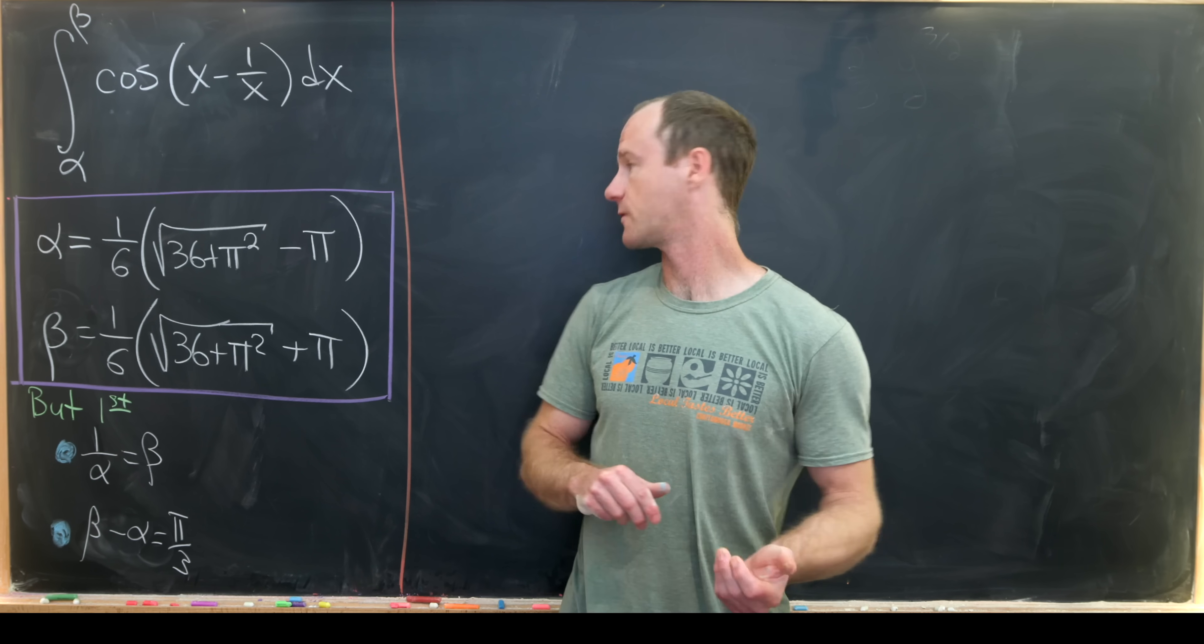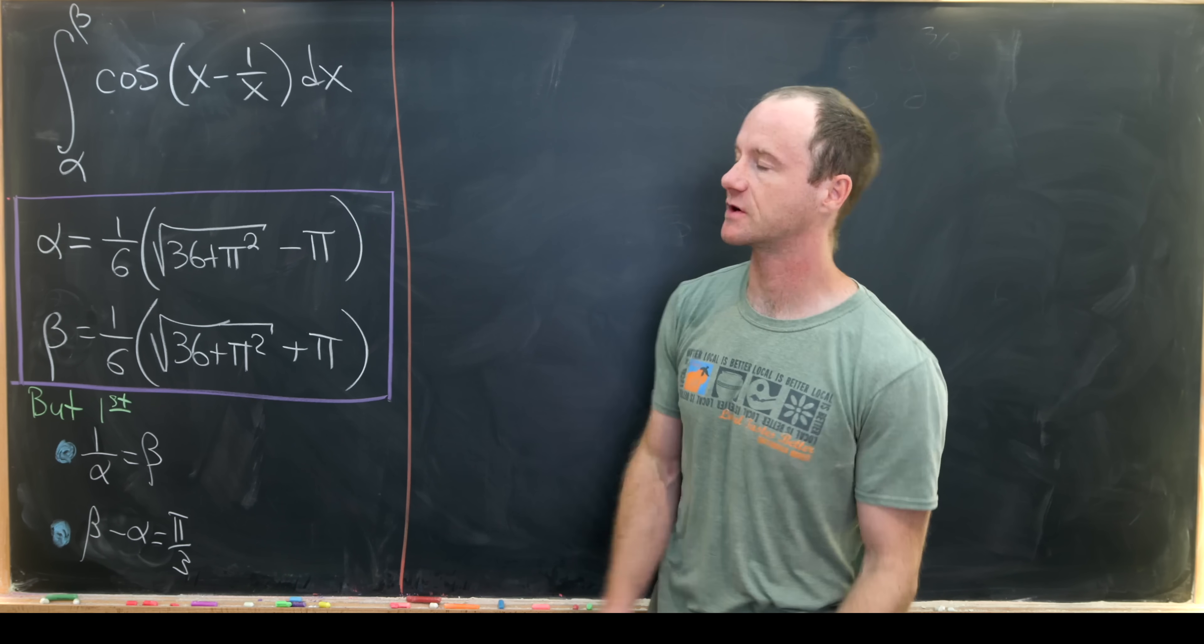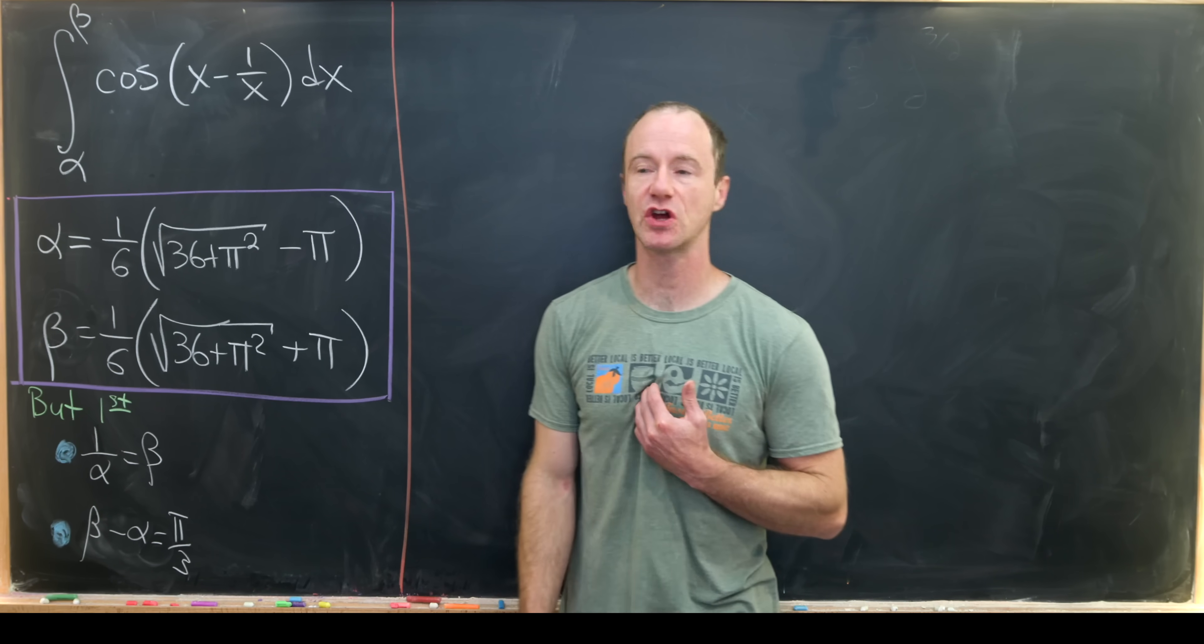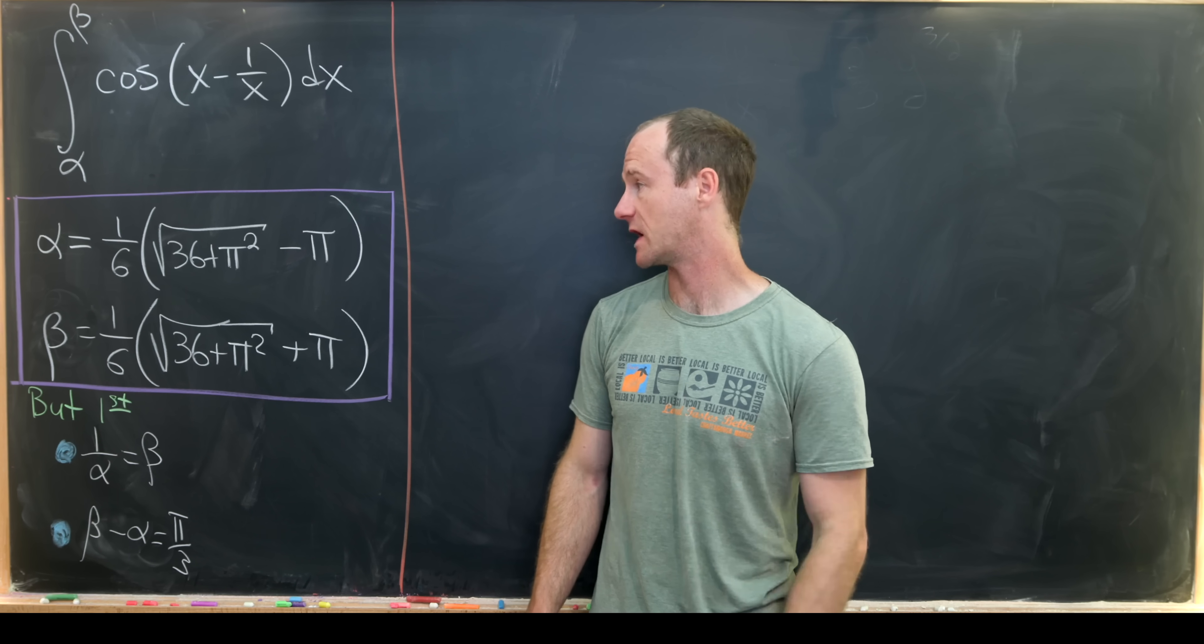Today I've got a nice crazy looking integral from our favorite integral suggestor. So what we want to do here is take the integral from alpha to beta of the cosine of x minus 1 over x dx.